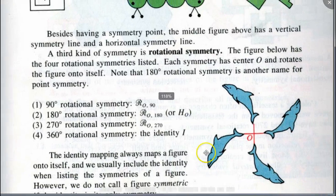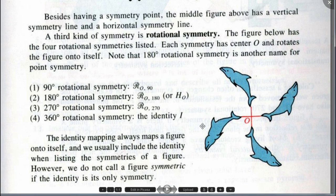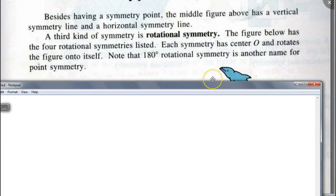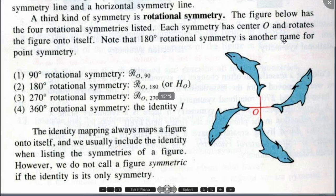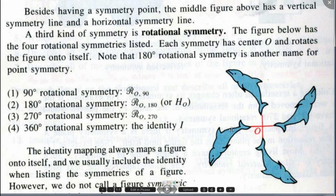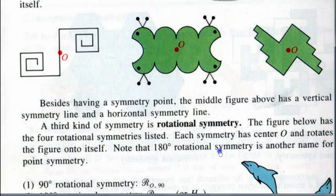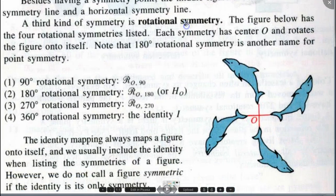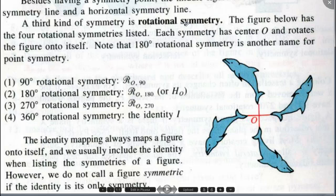There's another kind of symmetry called rotational symmetry. Besides having a symmetry point, the middle figure above has a vertical symmetry line and a horizontal symmetry line. A third kind of symmetry is rotational symmetry. The figure below has four rotational symmetries listed, each with center O. Note that 180-degree rotational symmetry is another name for point symmetry.